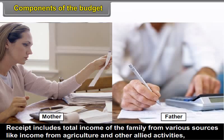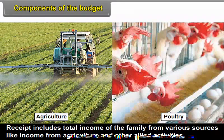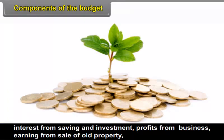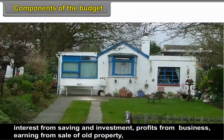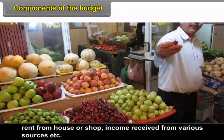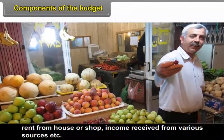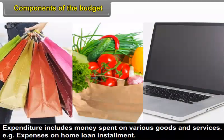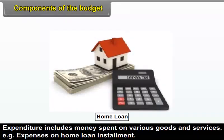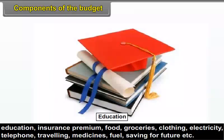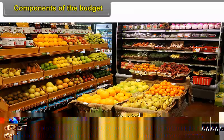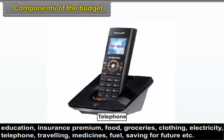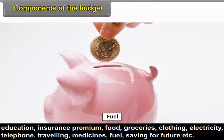4.4 Components of the Budget. Receipt includes total income of the family from various sources like income from agriculture and other allied activities, interest from savings and investment, profits from business, earnings from sale of old property, rent from house or shop, income received from various sources, etc. Expenditure includes money spent on various goods and services such as home loan instalment, insurance premium, food and groceries, clothing, electricity, telephone, travelling, medicines, fuel, and saving for future, etc.